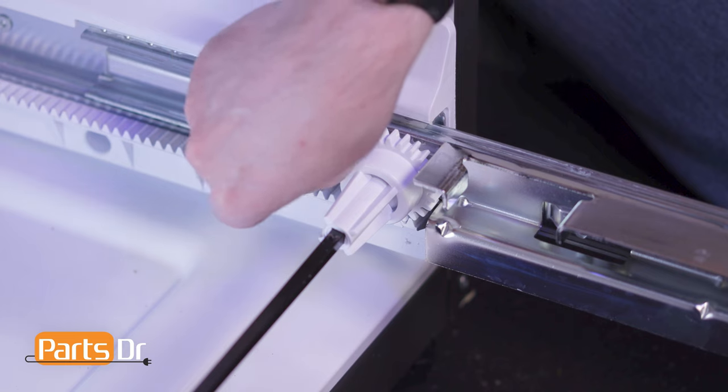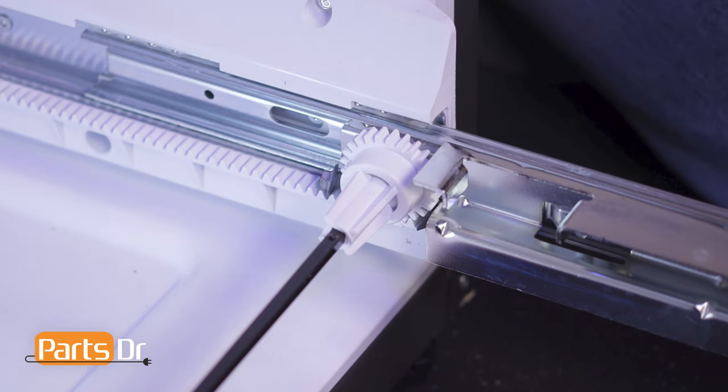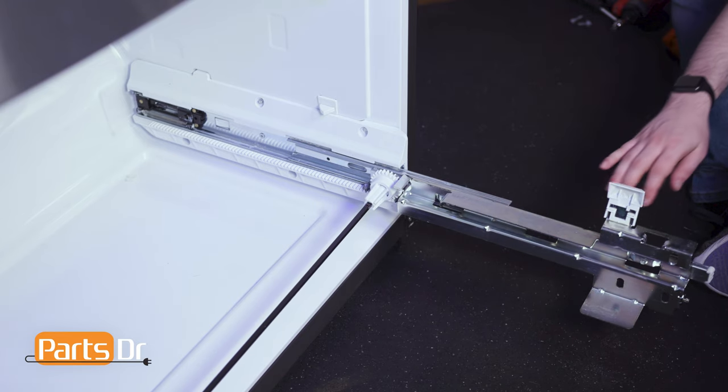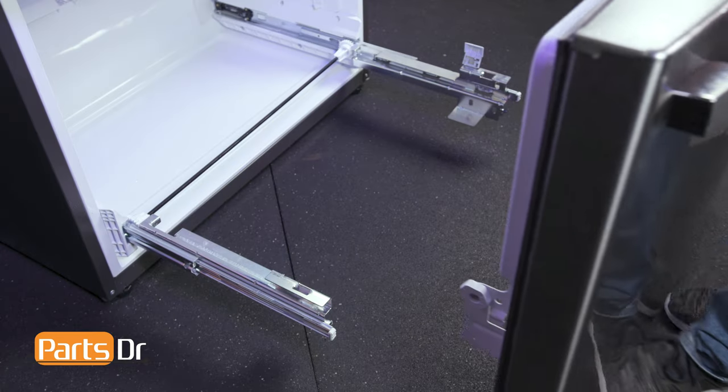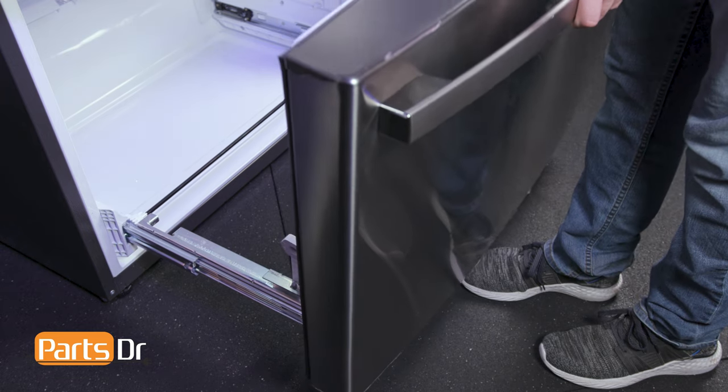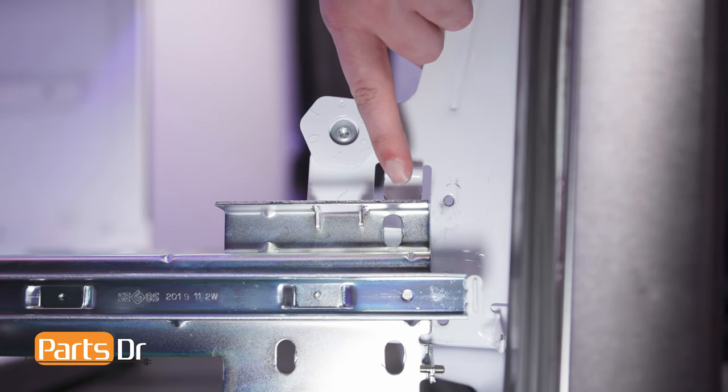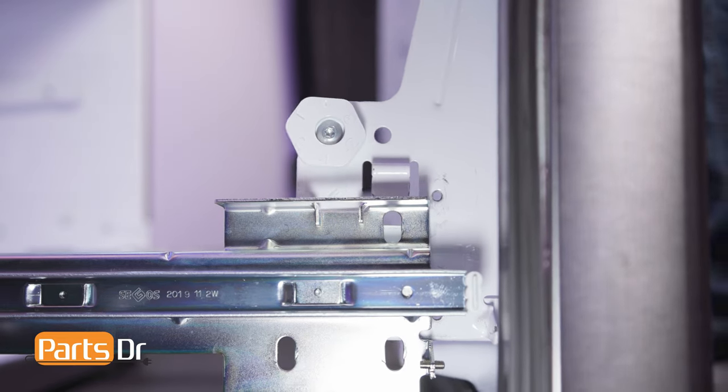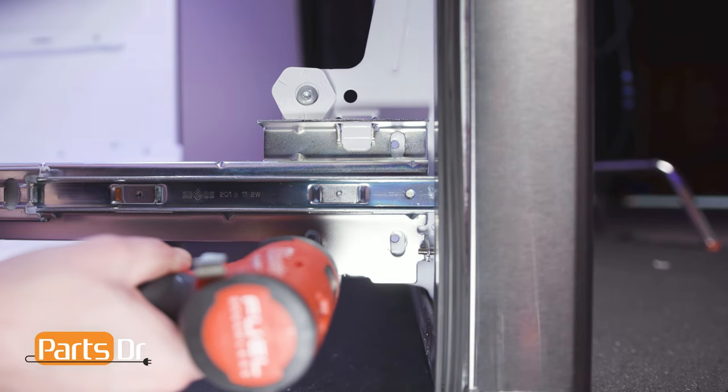To make installing the door easier, insert a small object onto the pinion wheel track to jam the gear so that the slide brackets stay in place. Then align the tabs on the door brackets to the retainers on the slide rails and gently set in place. Reinstall the screws.